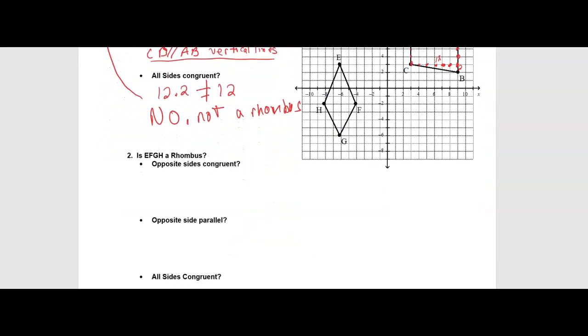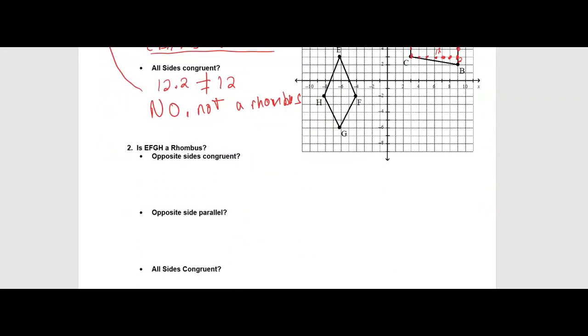All right. If we do the same thing with number two, are opposite sides congruent? So our opposite sides E, F and H, G are opposite sides. So let's see if we do a little Pythagorean theorem with them, how that would work. So if I go from G to H, I go up 2, 4, 6, 8, and then I would go left 1, 2.